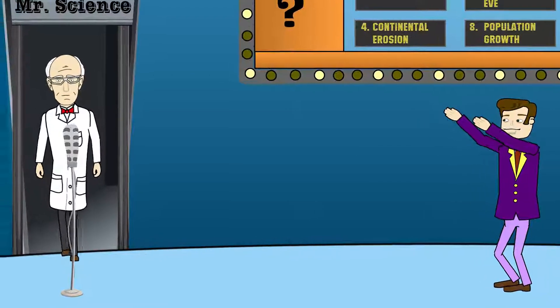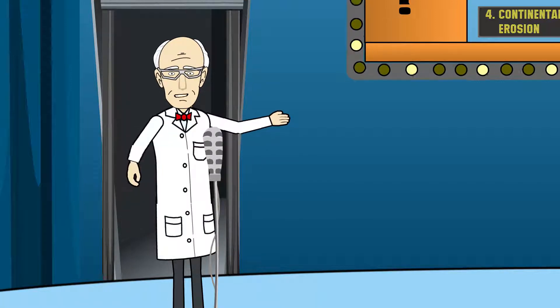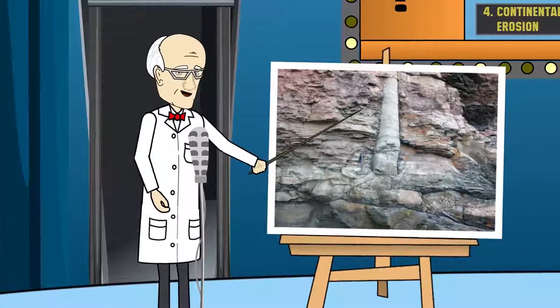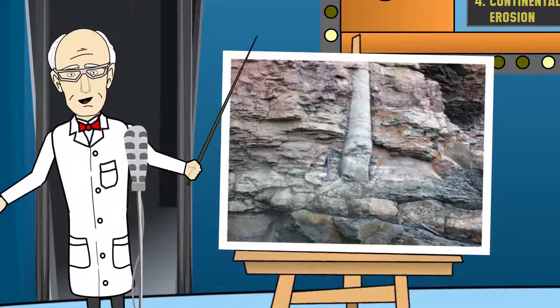Mr. Science, tell us about what scientists have observed in the fossil record. Paleontologists, scientists who study fossils, sometimes find things like this. A tree-like plant fossil extending many feet through separate layers of rock. These are called polystrate fossils.